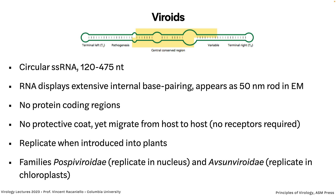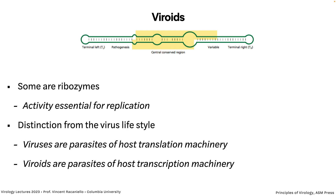When they're introduced into plants, they replicate. There are two kinds of viroids: the Pospiviroidae that replicate in the nucleus, and the Avsunviroidae that replicate in chloroplasts. Some of these have ribozymes — an RNA sequence that can cleave itself. It's an enzyme, probably a relic from the RNA world when there were no proteins. Viroids have a distinction from viruses. Viruses are parasites of the translation machinery, but viroids don't have any encoded protein. Rather, they are parasites of the transcription machinery of the host, because that is what copies them.